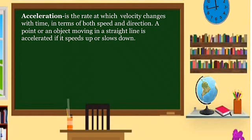Acceleration is the rate at which velocity changes with time in terms of both speed and direction. A point or an object moving in a straight line is accelerated if it speeds up or slows down. For example, if acceleration is equal to 8 meters per second squared, that is the common unit of acceleration — meter per second squared — meaning there is a change in the velocity within every second.